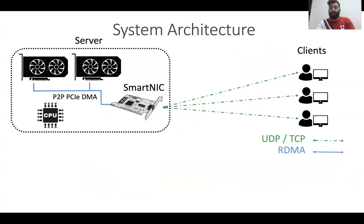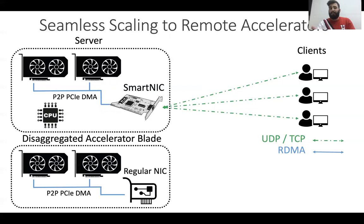This is how the system architecture looks. On the right we have the clients; on the left, the server. The clients can send UDP or TCP requests to the SmartNIC where Links will be running and will dispatch these requests to the local accelerators using RDMA over PCIe. The RDMA is used internally in the server while exposing a general interface towards the client. Links can also scale seamlessly to remote accelerators thanks to RDMA — for remote accelerators, Links uses RDMA via a regular RDMA NIC on the remote machine to access remote accelerators in the same way it accesses local ones.